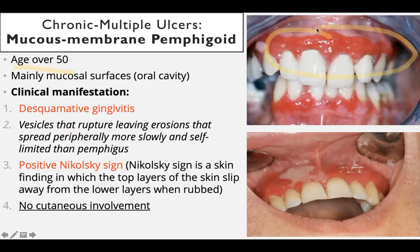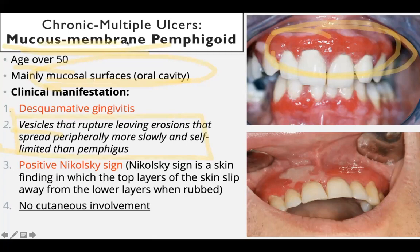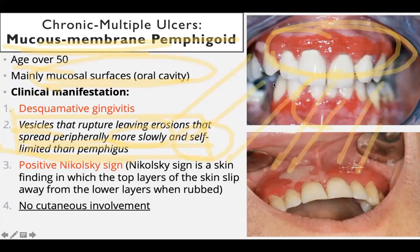Mucous membrane pemphigoid is present in elderly people, usually over age 50, mainly affecting the mucosal surface of the oral cavity — that's why it's called 'mucous membrane' pemphigoid. We have desquamative gingivitis, vesicles — shown in italicized form indicating disease progression — that rupture leaving erosions spreading peripherally, similar to pemphigus vulgaris but more slowly and self-limited.